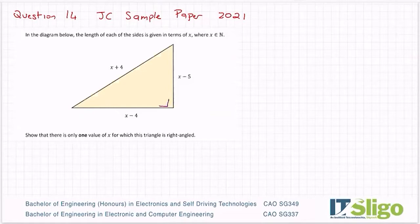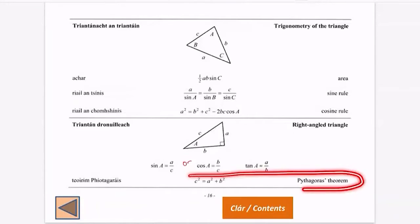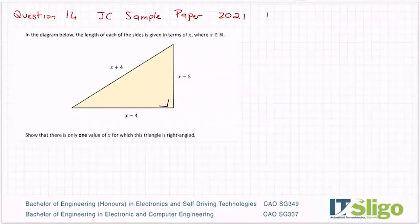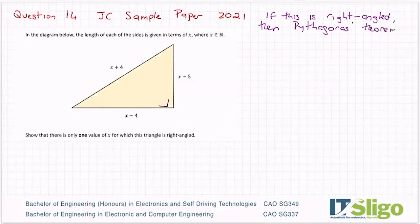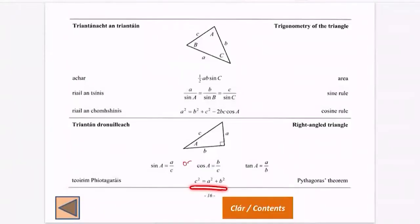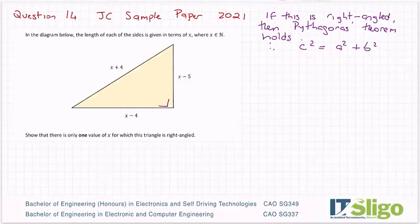Okay, if this is a right-angled triangle, then Pythagoras' theorem holds: c² = a² + b². So if this is right-angled, then Pythagoras' theorem holds, and holds means it's true. Therefore, c² = a² + b². So I've just literally wrote down Pythagoras' theorem from the trig section of the log table, page 16. Let's label my sides, because Pythagoras' theorem tells you that the hypotenuse squared is equal to the sum of the other two sides squared.